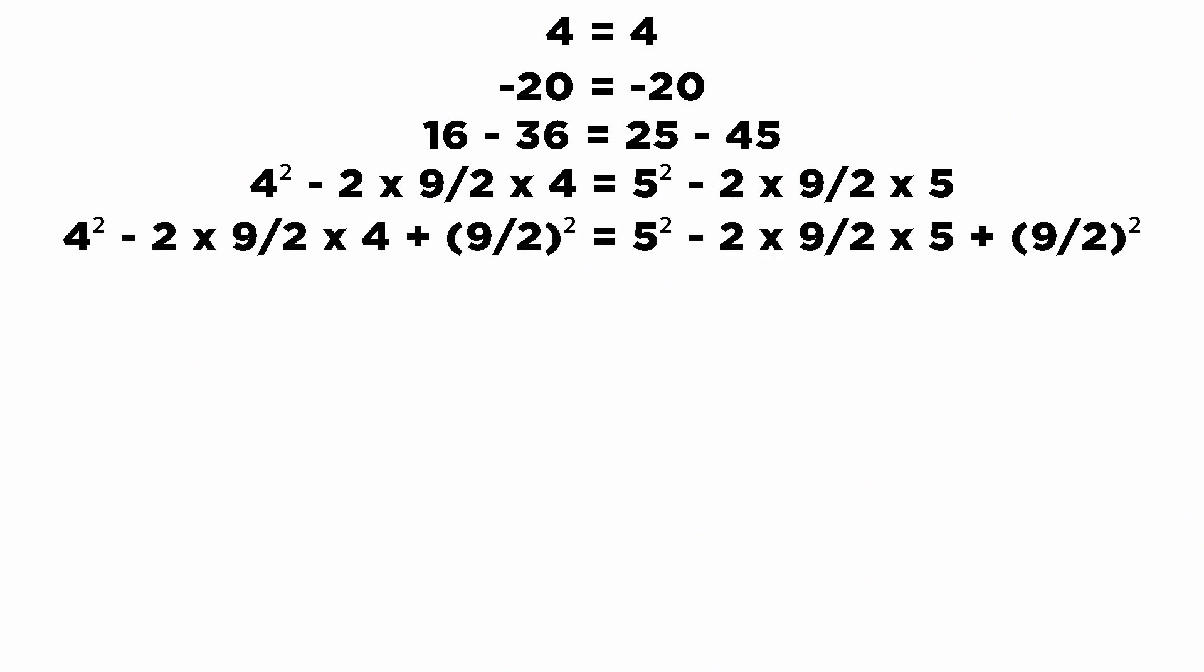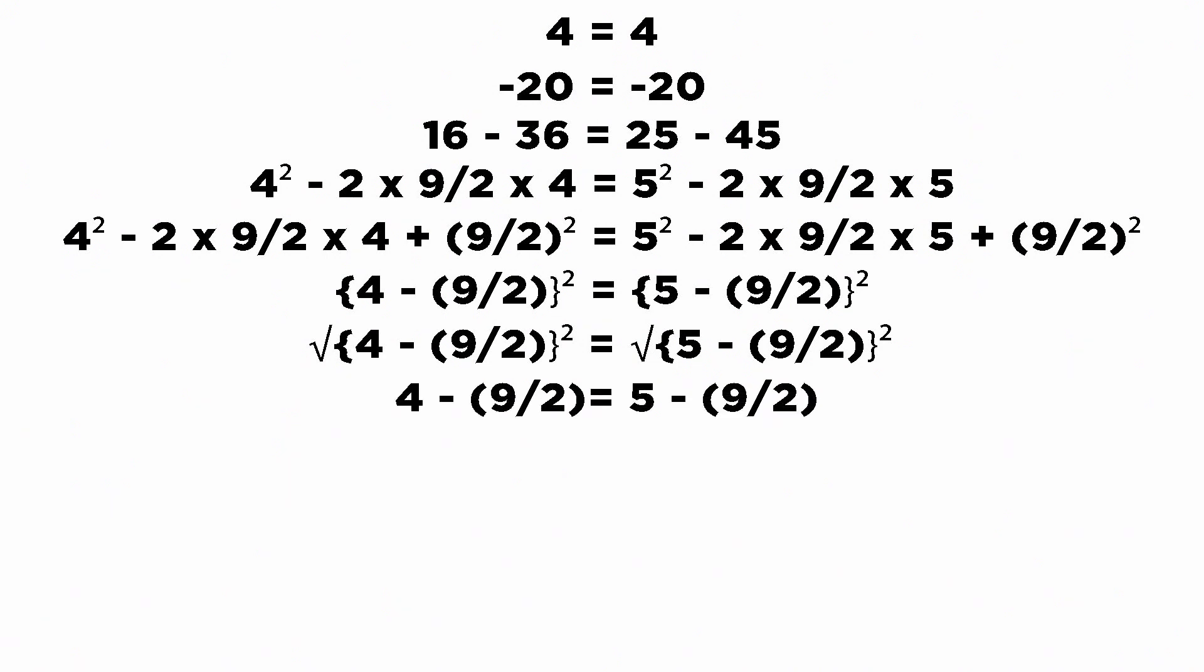Adding the square of 9/2 on both the sides, this becomes (4 - 9/2)² and (5 - 9/2)² on LHS and RHS respectively. Now taking square roots on both the sides and adding 9/2 on either side.